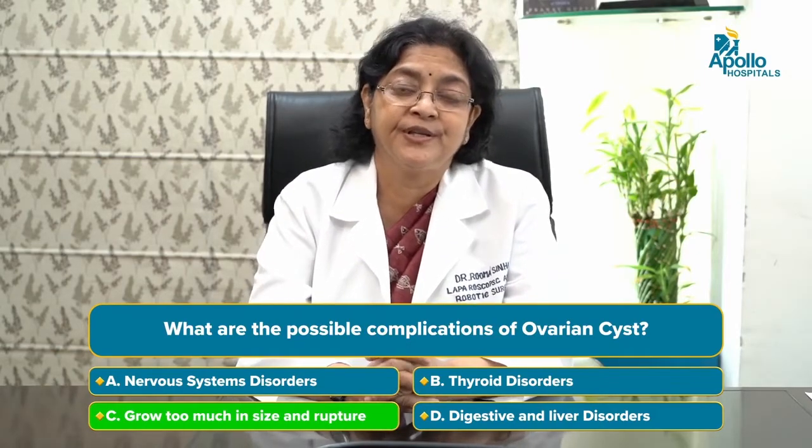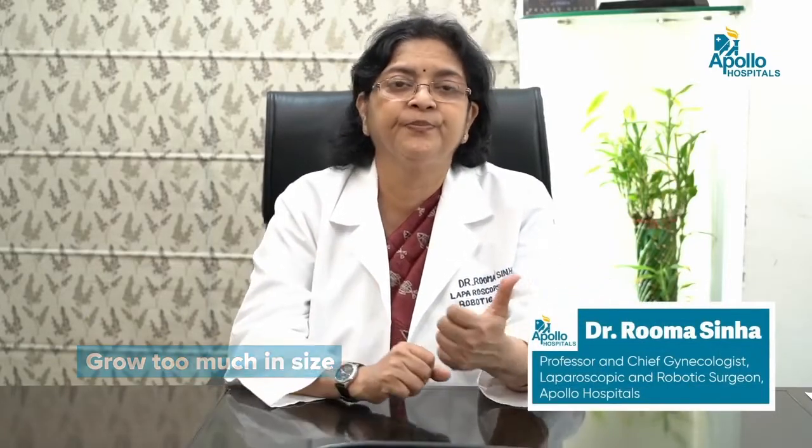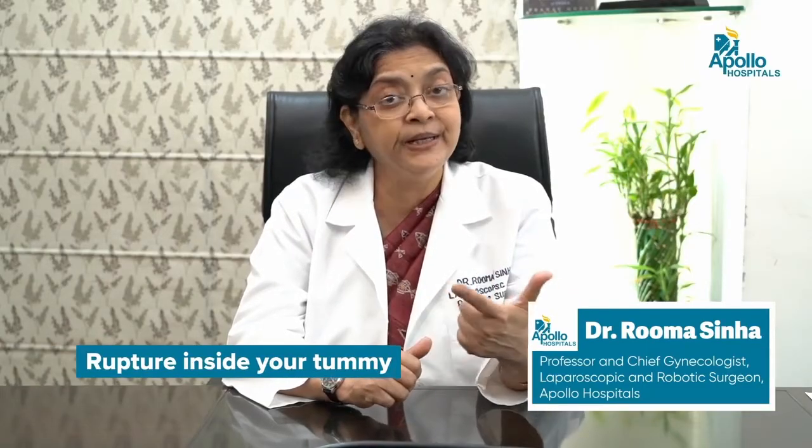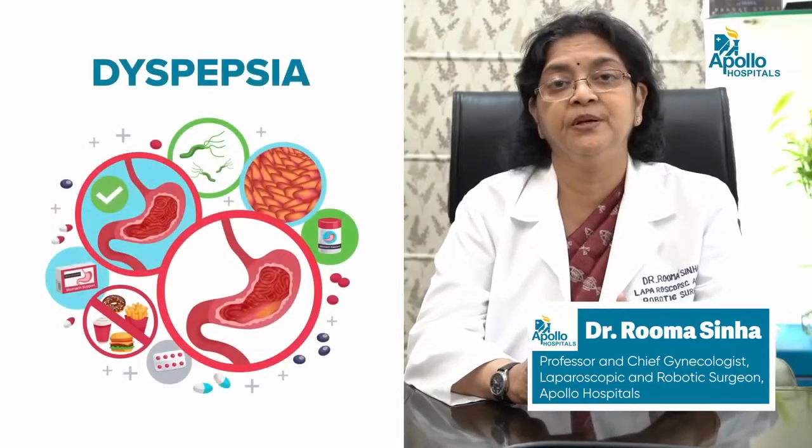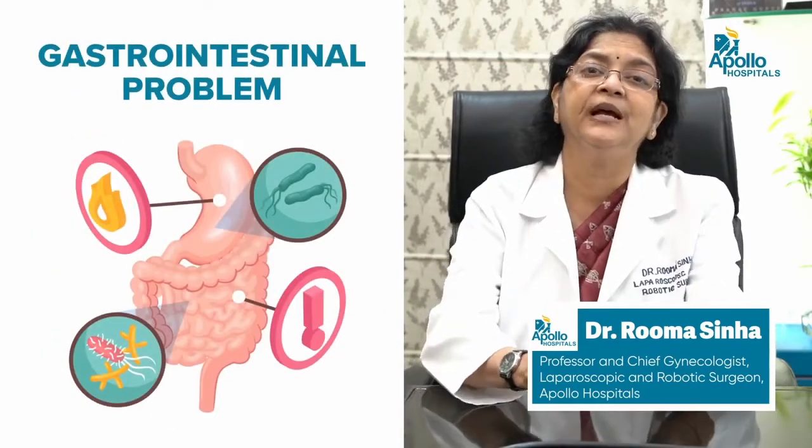Possible complications of ovarian cysts include: growing too large and causing a pressure or mass effect; rupturing inside the tummy causing bleeding or spread of cyst contents; undergoing torsion causing acute pain; or turning cancerous over the long term. Large asymptomatic cysts can also give rise to non-gynecological symptoms such as dyspepsia, bloating, dull aching pain, and gastric pain — symptoms that may lead women to see a gastroenterologist rather than a gynecologist.